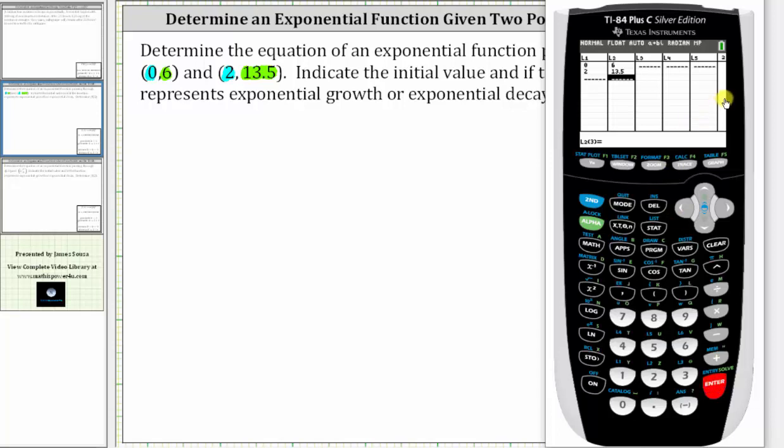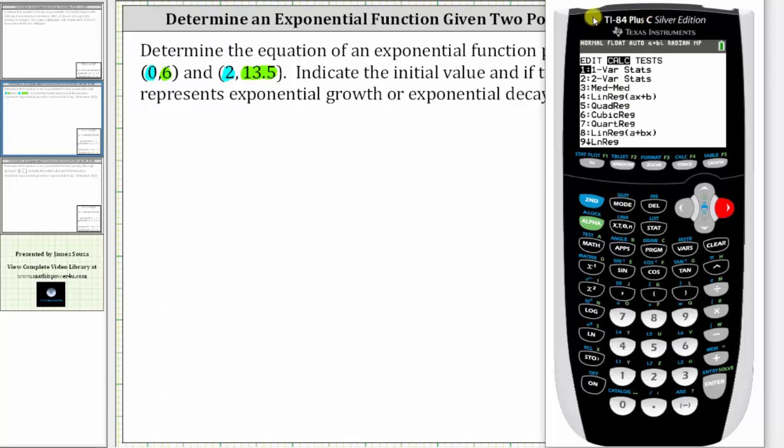Now we'll go back to the home screen by pressing 2ND MODE and perform exponential regression. We press STAT, right arrow once to CALC, and now we need to select exponential regression which is option 0. So if we scroll down past 9, ExpReg represents exponential regression.